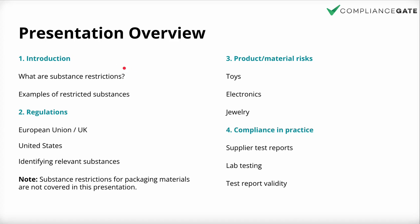First we look at the basics — what substance restrictions are and the different types. Then we move on to looking into a few practical cases of substance regulations in the EU, the UK, and also the US. We look into how you can identify the relevant substances for a certain product or material, then we look into compliance risks for toys, electronics, and jewelry. Finally we go into compliance in practice: how do you deal with supply test reports, lab testing, test report validity, and so on.